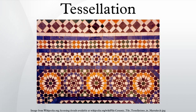Tilings with translational symmetry in two independent directions can be categorized by wallpaper groups, of which seventeen exist. It has been claimed that all seventeen of these groups are represented in the Alhambra Palace in Granada, Spain, though this is disputed. The variety and sophistication of the Alhambra tilings have surprised modern researchers. Of the three regular tilings, two are in the P6M wallpaper group and one is in P4M. Tilings in 2D with translational symmetry in just one direction can be categorized by the seven frieze groups describing the possible frieze patterns.